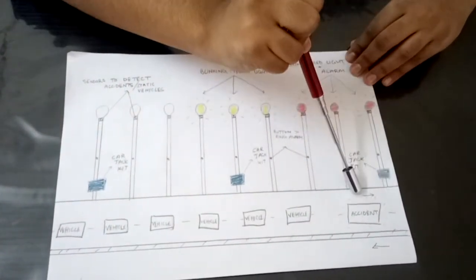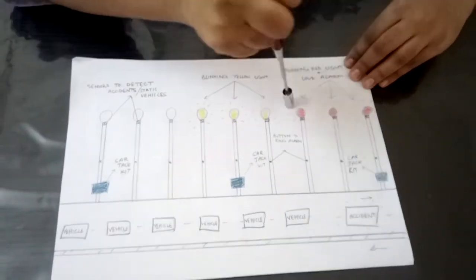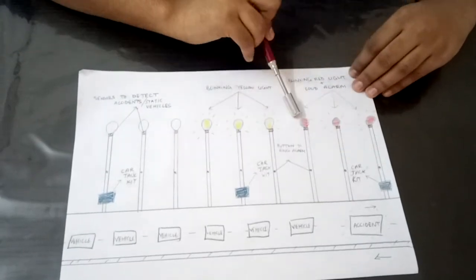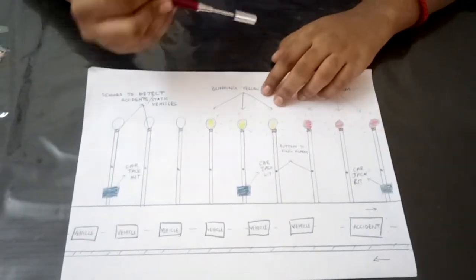Let's say an accident takes place here. In such a case, the closest three poles will blink bright red lights and will ring a very loud alarm while the next three will blink in a bright yellow light.